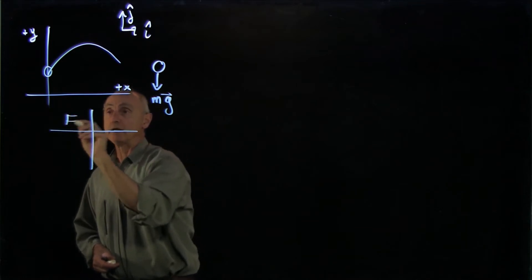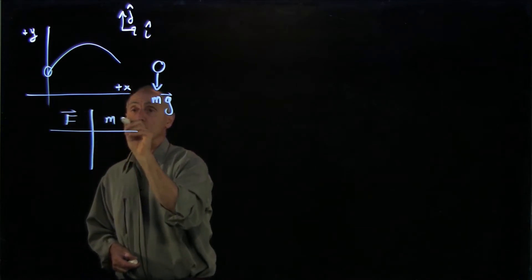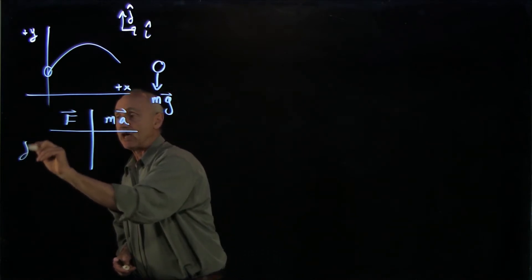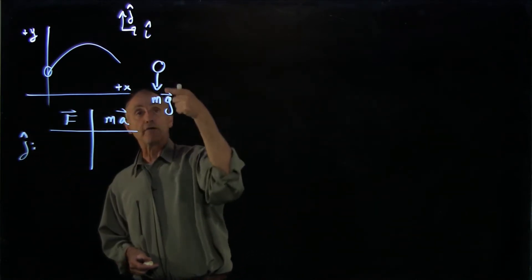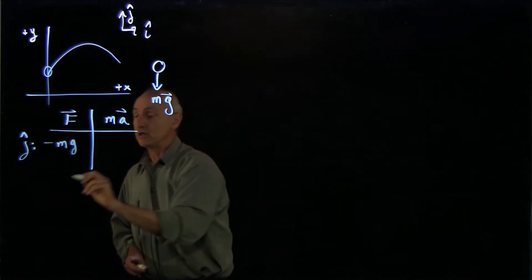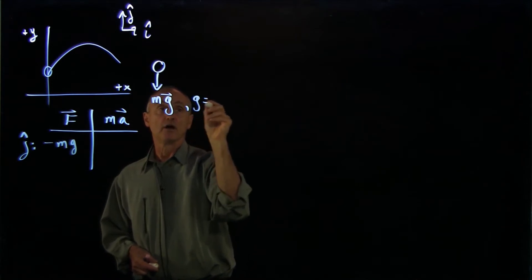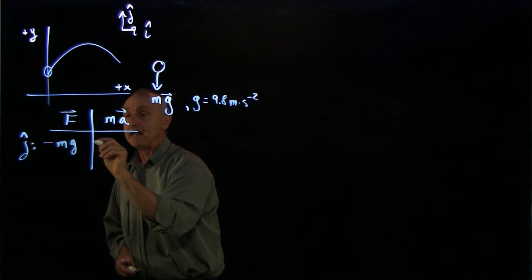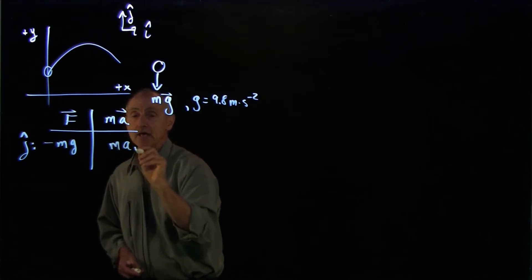When we write our equations of motion, F equals ma, we have two different directions. In the j-hat direction, we have the gravitational force downward, minus mg. Remember here that g is our positive quantity, 9.8 meters per second squared. And we have m times ay.